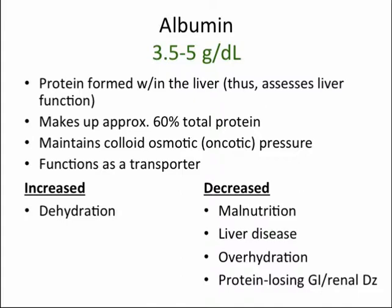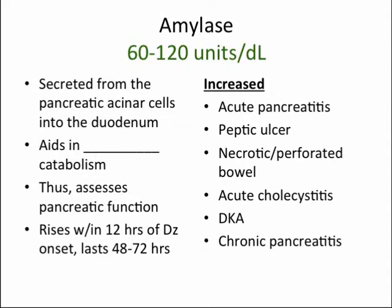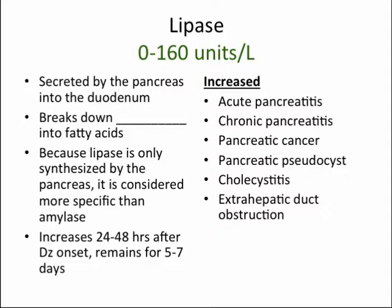One additional GI lab is the prothrombin time, or PT, which is actually considered the best indicator of acute liver injury because clotting factors are synthesized by the liver. Amylase is secreted from pancreatic cells into the duodenum and aids in carbohydrate catabolism, assessing pancreatic function. It rises within 12 hours of disease onset and lasts 48 to 72 hours. Lipase is also secreted by the pancreas into the duodenum and functions to break down triglycerides into fatty acids. Because lipase is only synthesized by the pancreas, it is considered more specific than amylase; however, it increases 24 to 48 hours after disease onset and remains elevated for five to seven days.